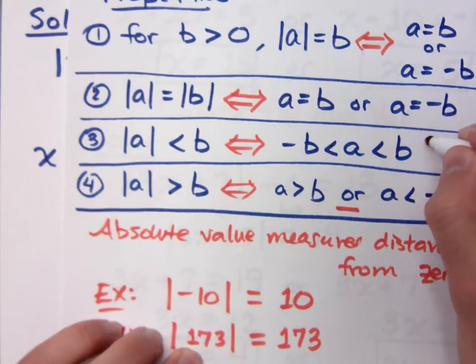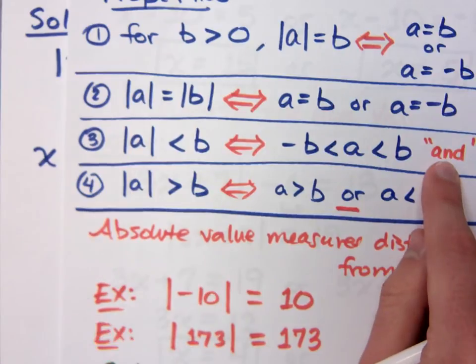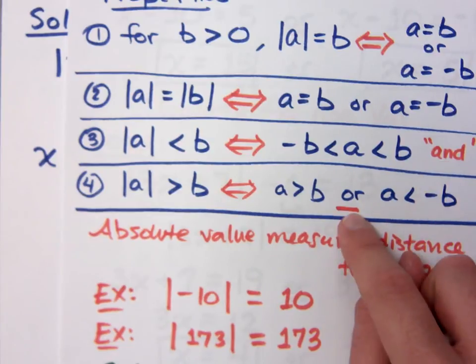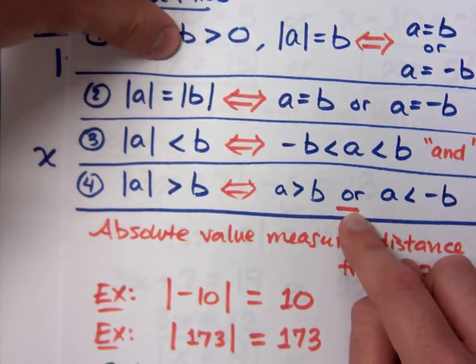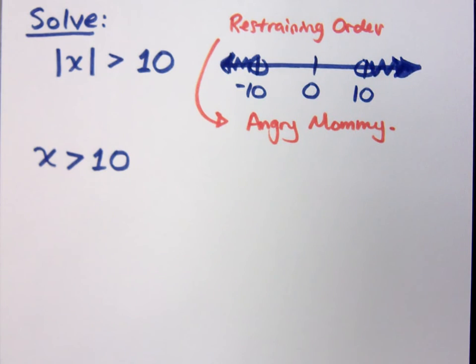This word or is very important to us. This is the word or. What's understood up here? This is understood to be the word and. What did and mean? And meant intersection. Or means what? Union. That's why when I'm talking about or here, I'm looking at doing a union, joining these guys together.